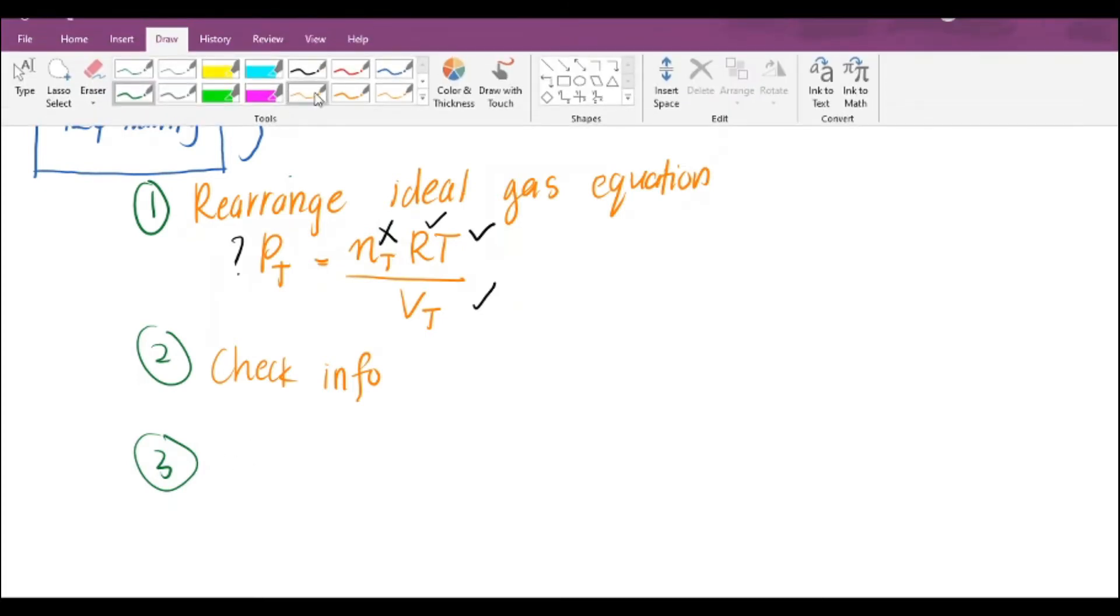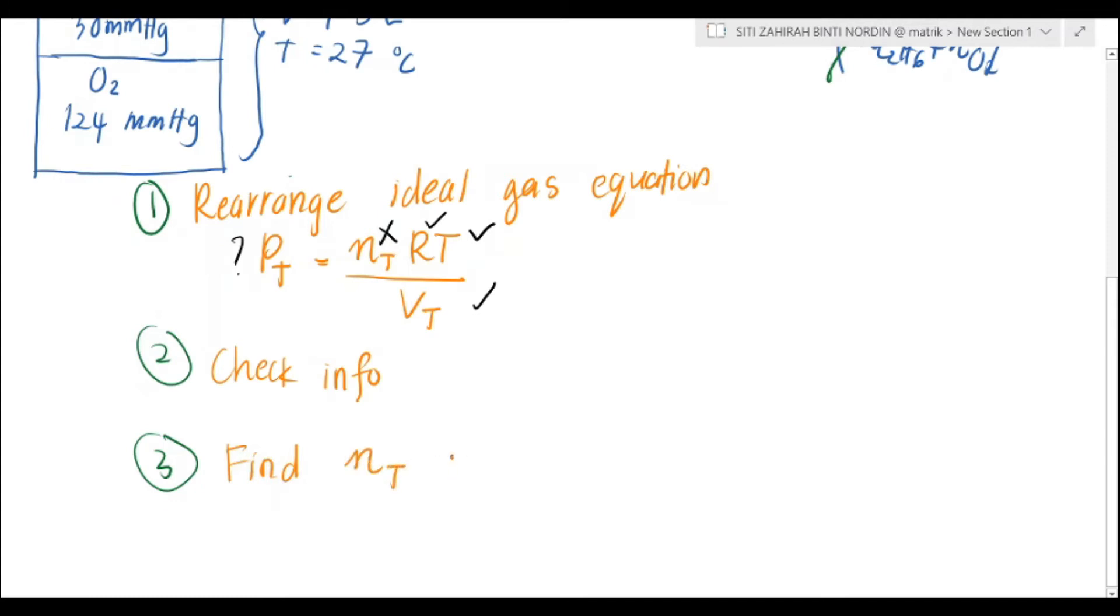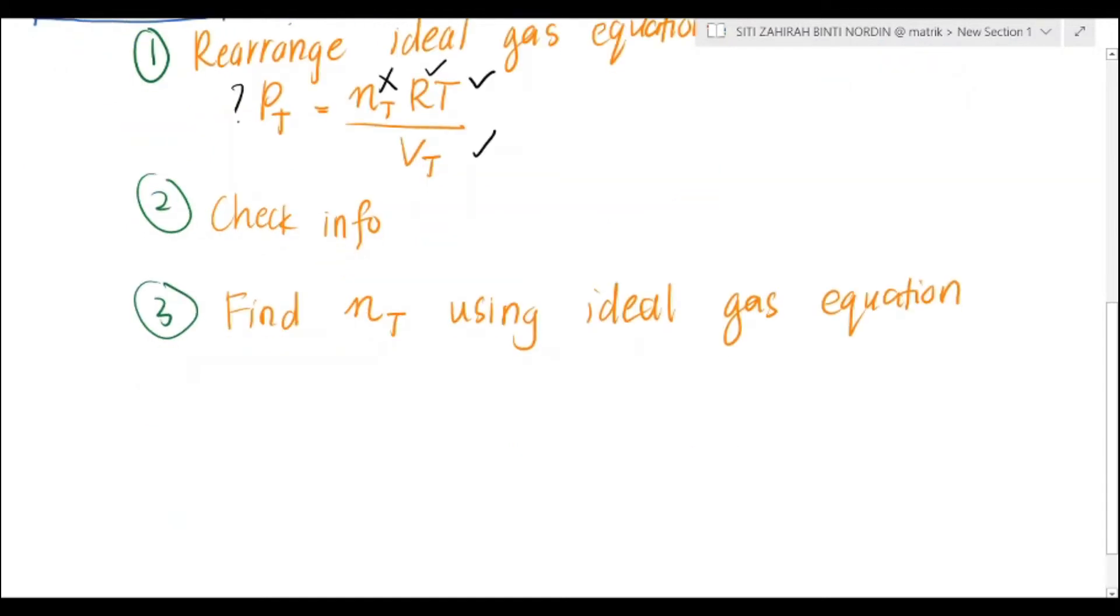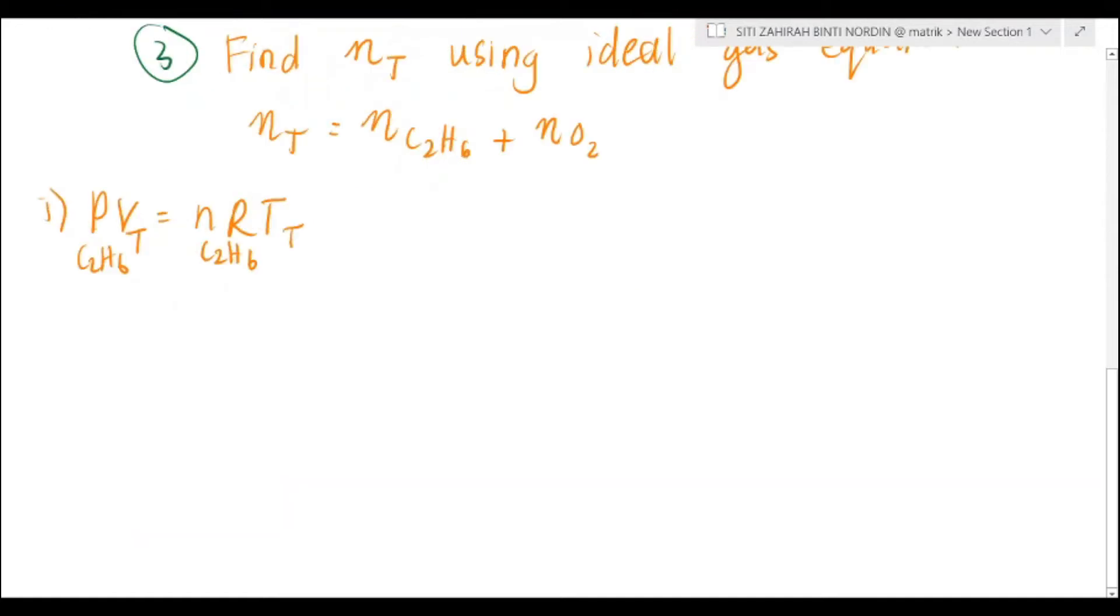Next is, we want to find the mol total using ideal gas equation. Just change your subscript. We want to find the total mol. We know that the mol total is equal to mol C2H6 plus mol of O2. Your PV equals mol C2H6 plus mol O2. Let's say we want to find the mol of C2H6. Volume must be total. Rearrange first.